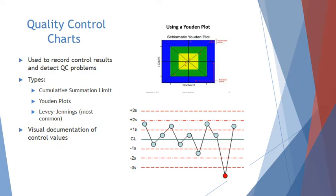Quality control charts are charts used to record control results and detect QC problems. They are a great visual representation of your QC data. There are several different types of QC charts, such as the cumulative summation limit, Gowden plots, and Levy-Jennings charts. Levy-Jennings charts are by far the most commonly used QC charts in the clinical lab. The image at the top shows an example of a Gowden plot, and below that is an example of a Levy-Jennings chart.